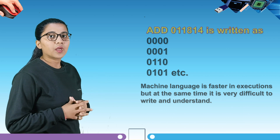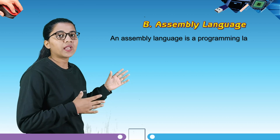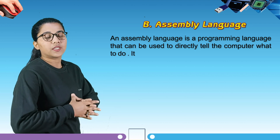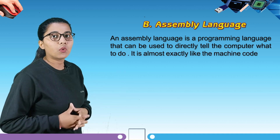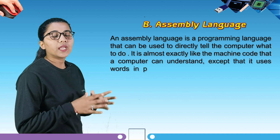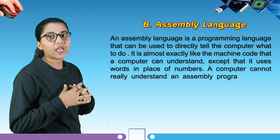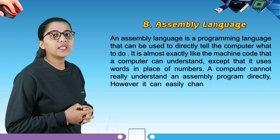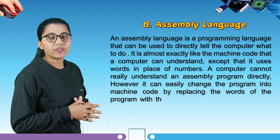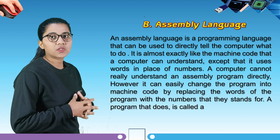Our second language is assembly language. An assembly language is a programming language that can be used to directly tell the computer what to do. It is almost exactly like the machine code that a computer can understand, except that it uses words in place of numbers. A computer cannot directly understand an assembly program; however, it can easily convert the program into machine code by replacing the words with the numbers they stand for. A program that does this is called an assembler.